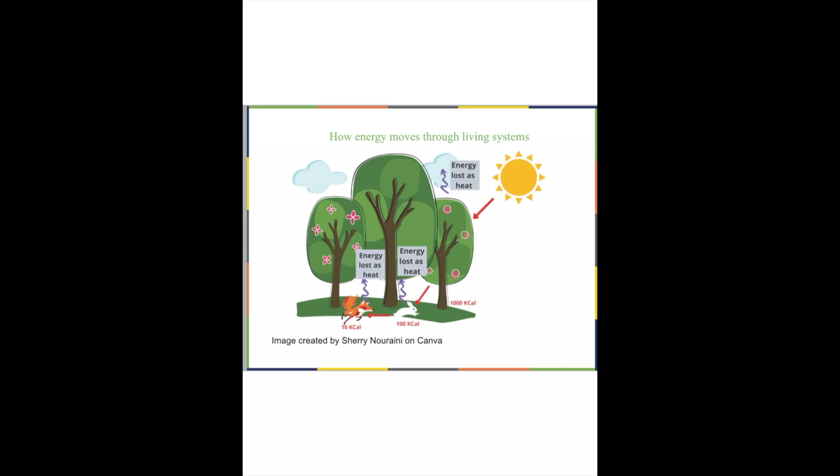So what happens to energy when it enters an ecosystem? Well, the ultimate source of energy for all living things, most living things on Earth, is the sun. So sun has a lot of energy, and how does that energy reach the Earth? It's through light, so particles of light travel down here.